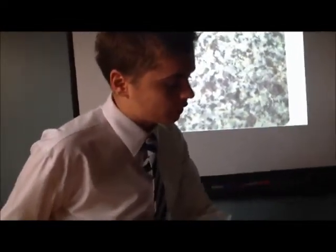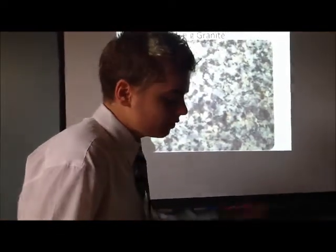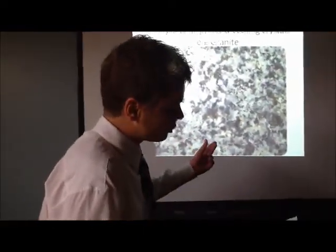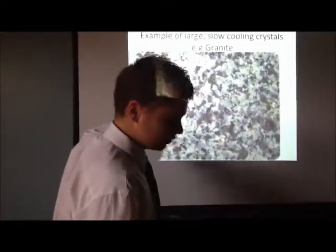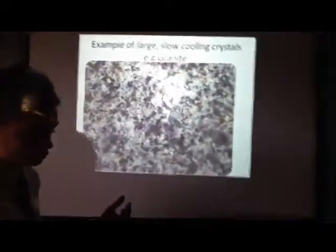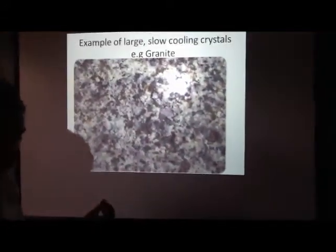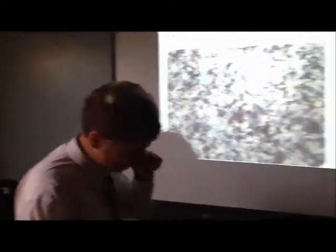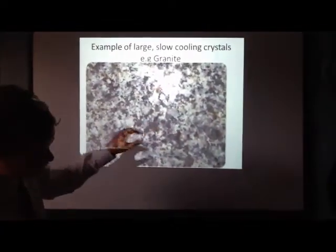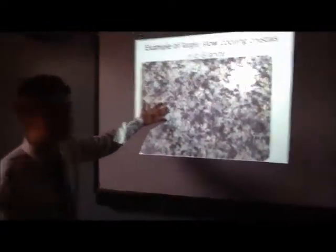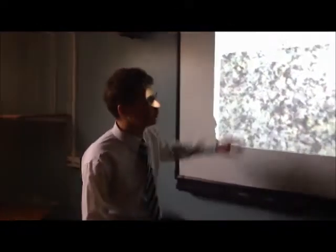Intrusive volcanic features: magma cools, crystallizes and solidifies into igneous rocks. Slow cooling produces large crystals, for example granite and dolerite. After the overlying rocks have been eroded, the intrusive landforms become visible.